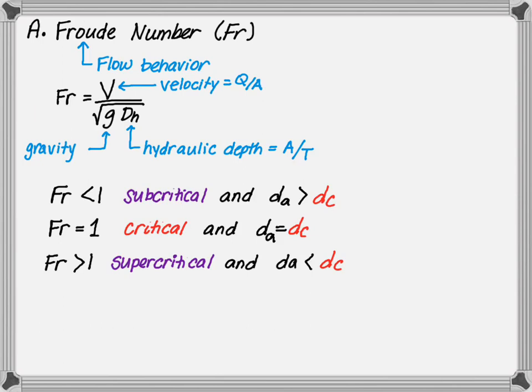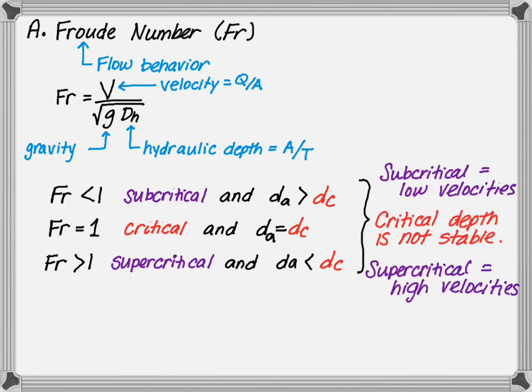When flow depths are less than critical, the velocity is high, resulting in fast flow velocities. Conversely, when flow depths are greater than critical, the velocity within the channel is lower, resulting in slower flow velocities.